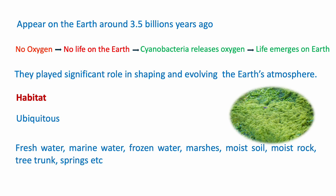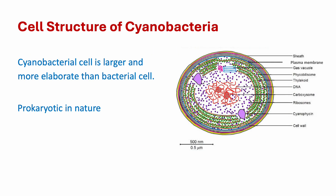Habitat: cyanobacteria are ubiquitous in nature, meaning they can be found in all types of aquatic and terrestrial environments, such as fresh water, marine water, frozen water, marshes, moist soil, moist rock, tree trunks, and hot springs, etc.